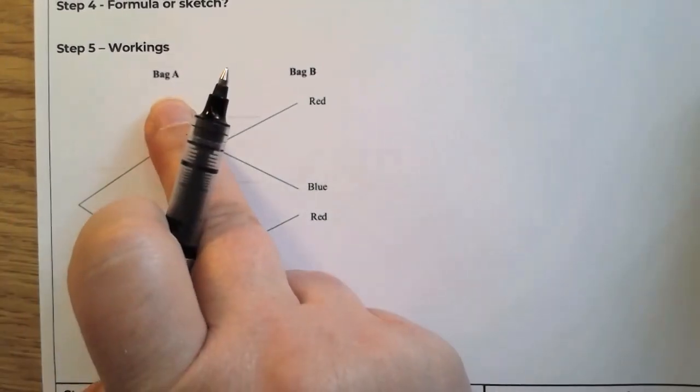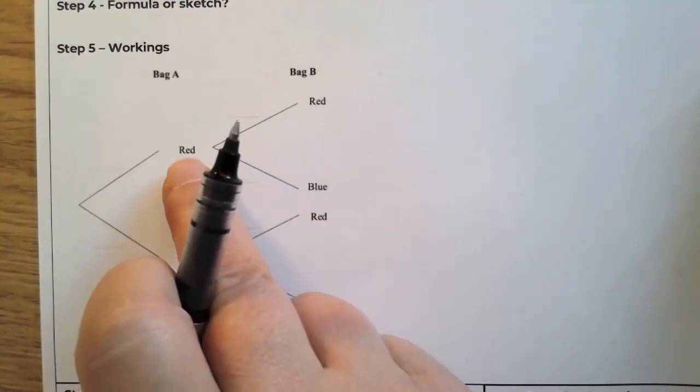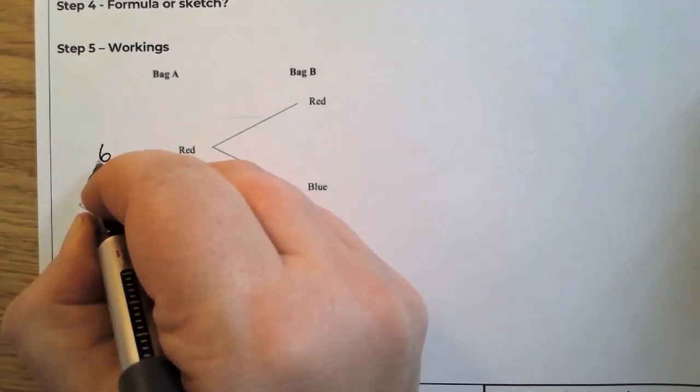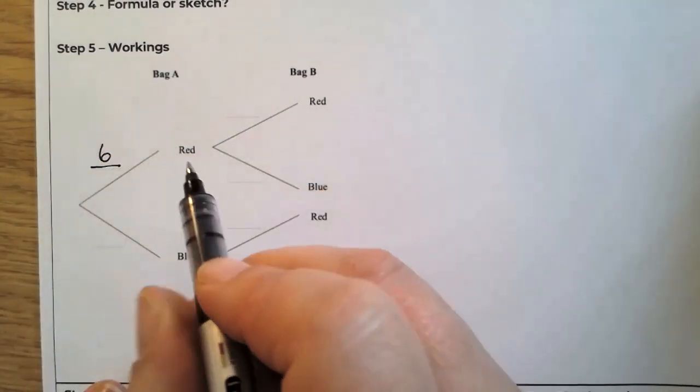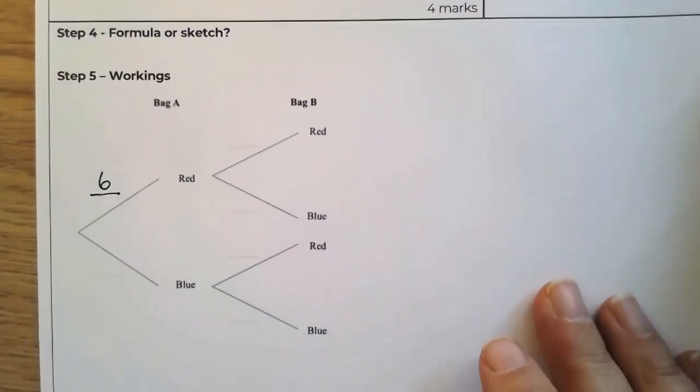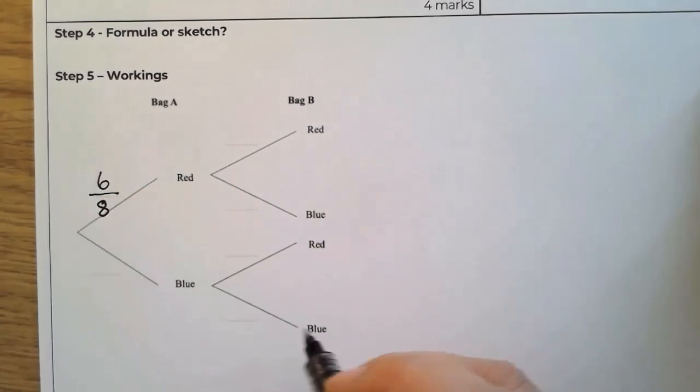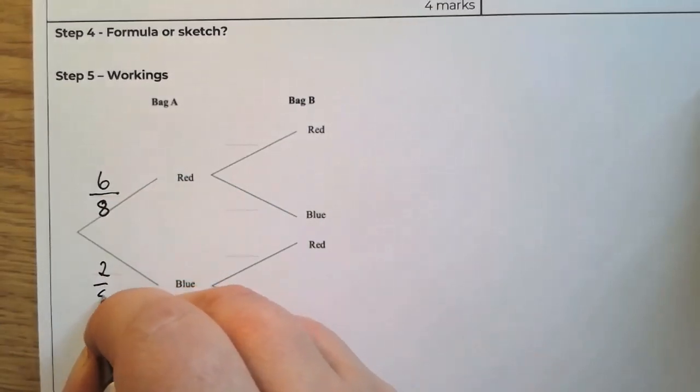Now in bag A, there are six red counters and two blue counters. So if we're going to take out a red counter, there's going to be six out of - six and two means that there are eight counters in the whole bag. So there are six chances out of eight. Blue, it'll be two out of eight.